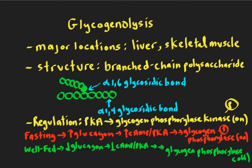After watching this video, you should be able to describe glycogenolysis or glycogen breakdown, including listing the major locations where glycogen breakdown occurs, describe a little bit about the structure of glycogen including the types of glycosidic bonds, recall the important key enzymes that are either targets of regulation or disease, and describe the regulation of glycogen breakdown in the fasting and well-fed state — that's mostly glycogen breakdown regulation in the liver.